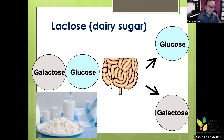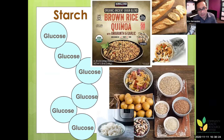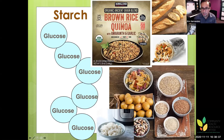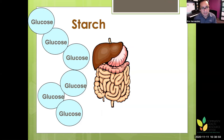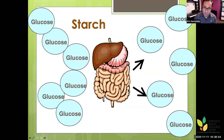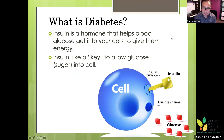Back to starch — foods like beans, quinoa, and brown rice are excellent, while refined baguette and white rice are not as good, but all of them contain glucose. As long starch chains are digested and broken down into individual glucose molecules, they enter your bloodstream.